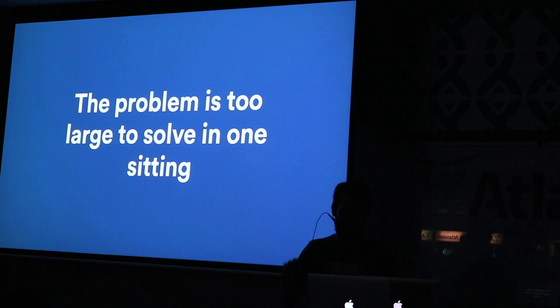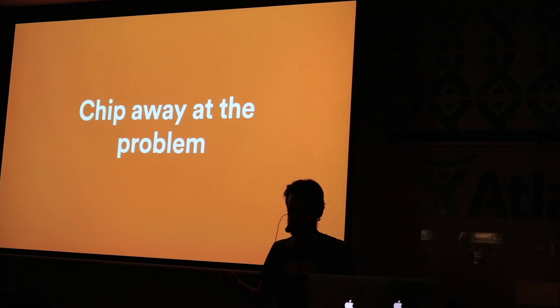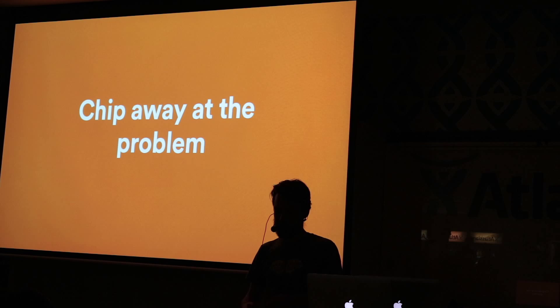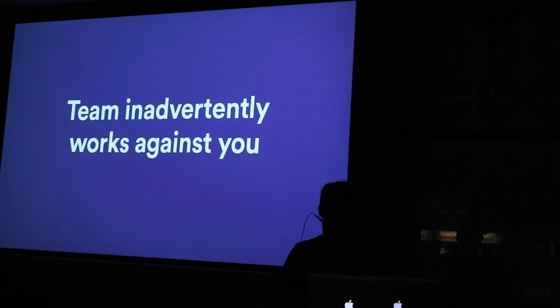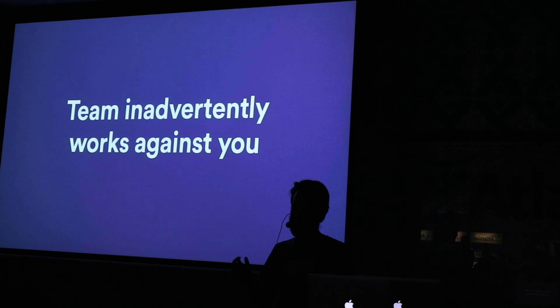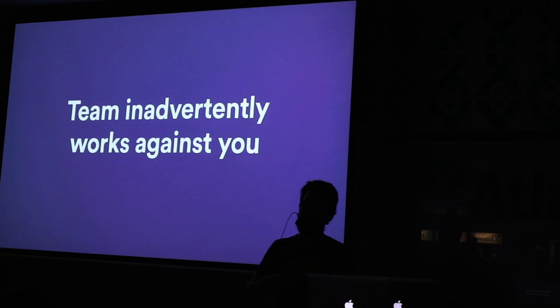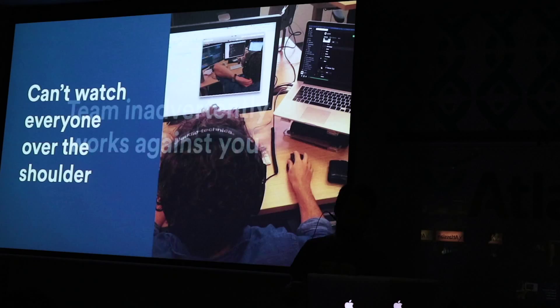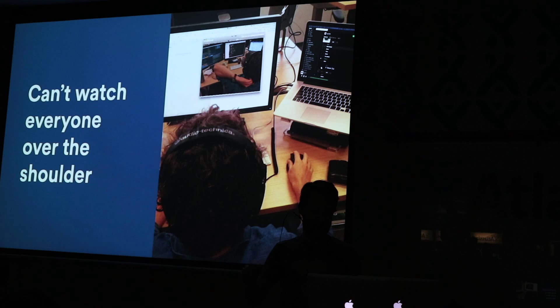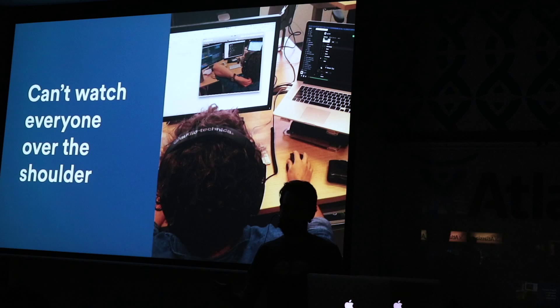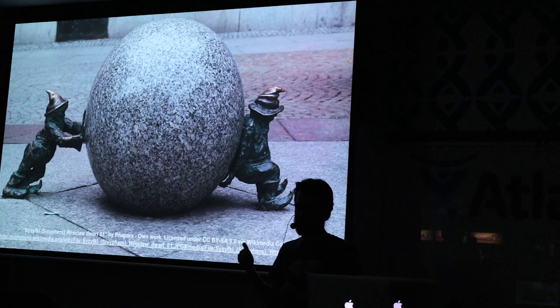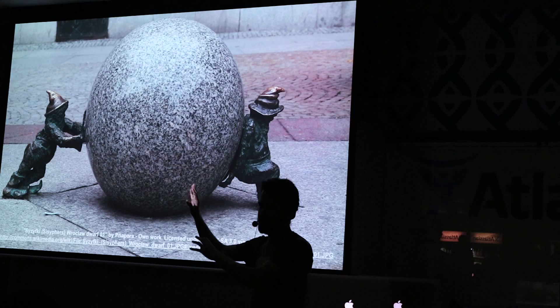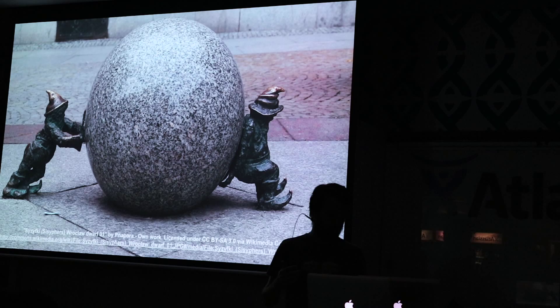The problem with this, and with static analysis, is that the problem is too large to solve in one sitting. If we could solve it in one sitting, we'd just go away, fix all the things, do one pull request, and job done. So your traditional approach would be to chip away at it — set aside a day a week to go fix up some warnings. But the problem is that the other four days of the week, the rest of your team is working against you. They don't know it, they're not actively malicious, there's just no feedback to them that the things they're doing are anti-patterns contributing to this problem. I can't watch everyone over their shoulder — the scale of the team, there's just too much change coming in. It feels like a Sisyphean task, pushing a boulder to try and fix the page weight or static analysis problems while the rest of the team slows you down. You want the team to help you, not work against you.